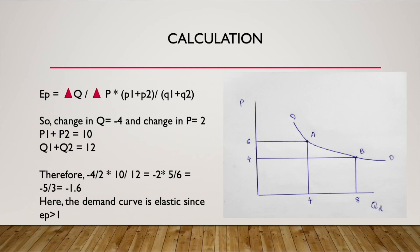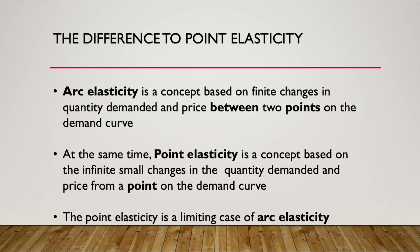Simplifying, we get minus 5 by 3, or approximately minus 1.6. This implies that the demand curve is elastic, as the absolute value of ED is greater than 1. While arc elasticity is based on finite changes in quantity demanded and price between two points on the demand curve, point elasticity is based on infinitely small changes from a point on the demand curve — that is why it is called point elasticity. Point elasticity is the limiting case of arc elasticity: when changes in price and quantity are very small, the arc converges to a point.